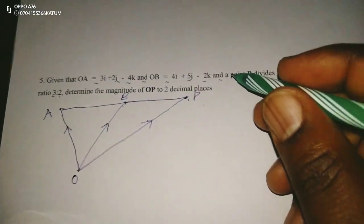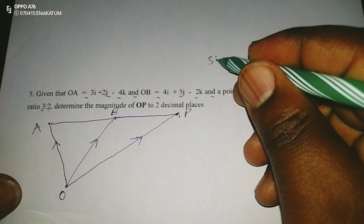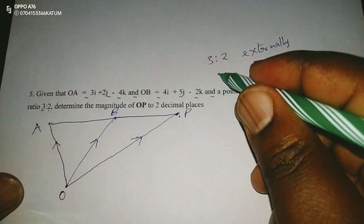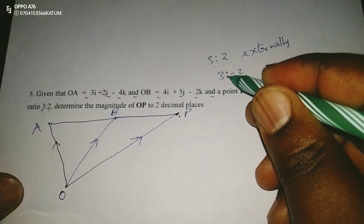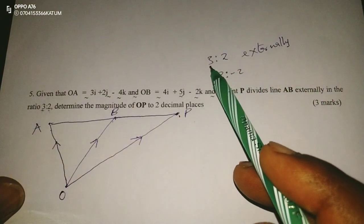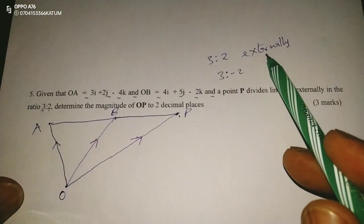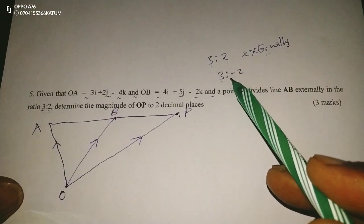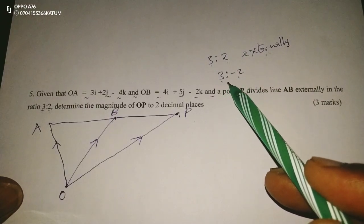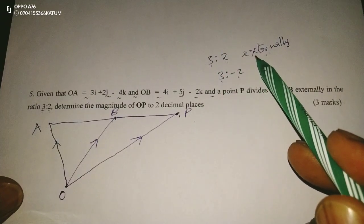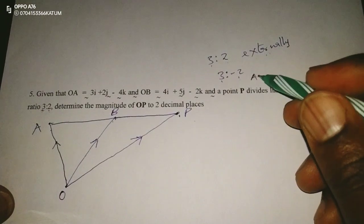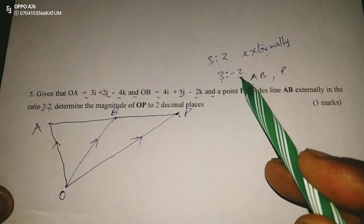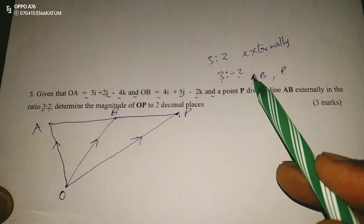3, let me use the space even up here. So 3 is to 2 with the word externally would mean the same as 3 is to negative 2. So this statement, the ratio 3 is to 2 externally, or externally in the ratio 3 is to 2, would mean the same as 3 is to negative 2. So simply 3 is to negative 2 means 3 is to 2 externally. So it means if it's dividing A, B, and the point is P, from A to P, we have 3 units, then we get back to where B is by covering 2 more units.